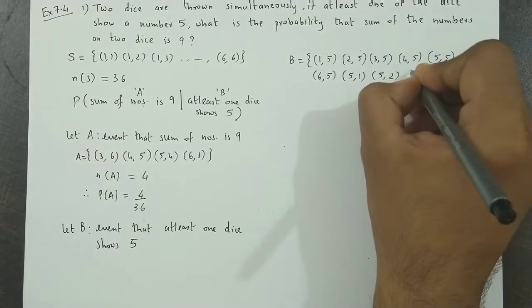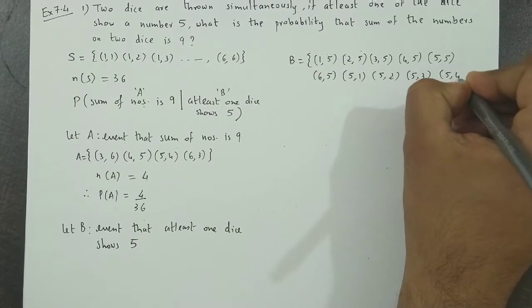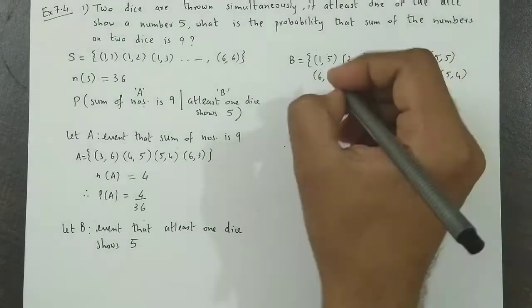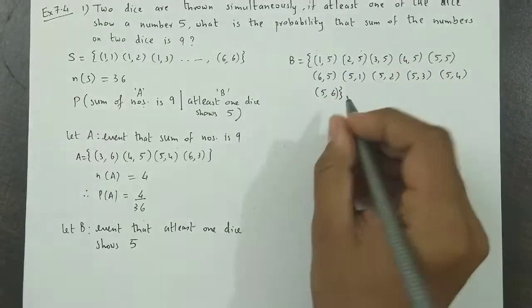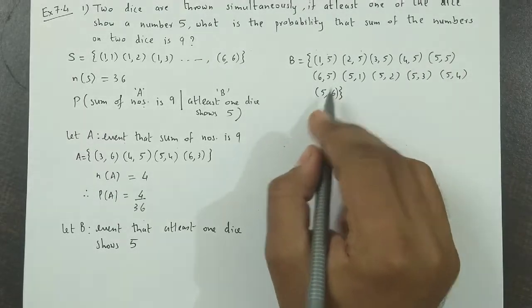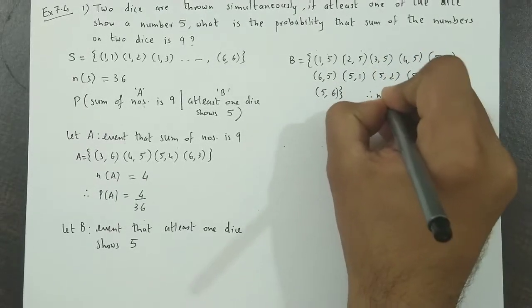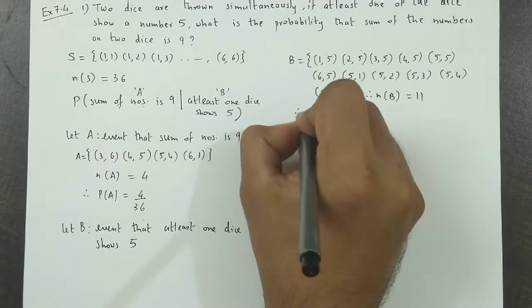(5,2), (5,3), (5,4), (5,5) - already counted - (5,6). One, two, three, four, five, six, seven, eight, nine, ten, eleven. So n(B) is equal to 11. Therefore,